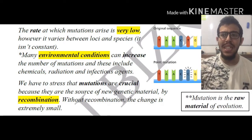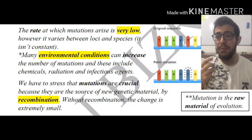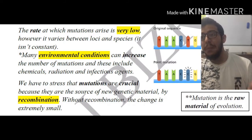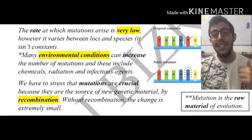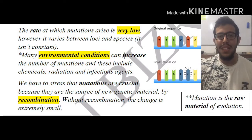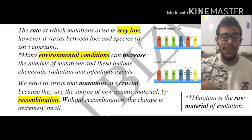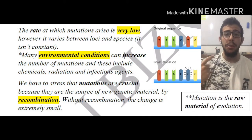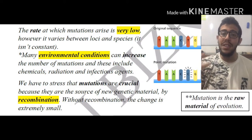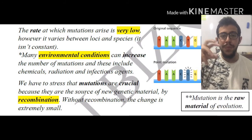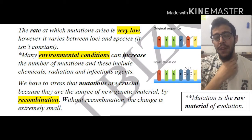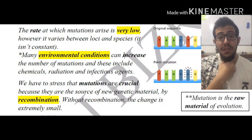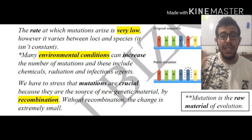Most environmental conditions can increase the number of mutations, and these include chemicals, radiation, infectious agents, etc. This is extremely important, and that's why they tell us that even if, for example, we spill a certain chemical on our body, this might not be harmful in the immediate effect, but it can have some drastic changes. Just like we know that having multiple x-rays consecutively is going to be inducing cancer.